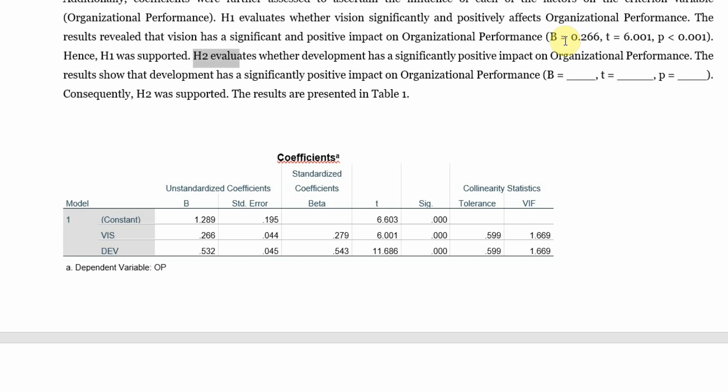Similarly you can do it for H2 as well. Just copy the beta value, the t-value and the p-value again and H2 was supported as well.